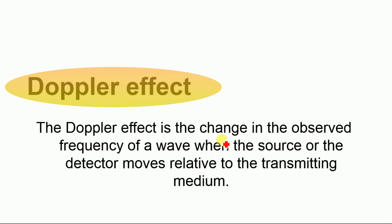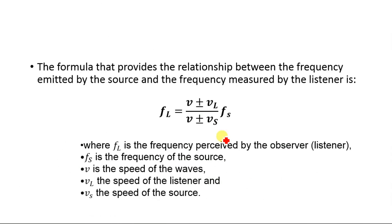The Doppler effect is a change that occurs in the frequency of the sound you hear when the source is moving relative to you, or you are moving relative to the source. The source is the object producing the sound and the observer is the listener. Here is the equation that provides the relationship between the frequency emitted by the source and the frequency measured by the listener.